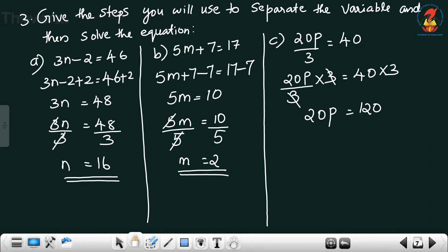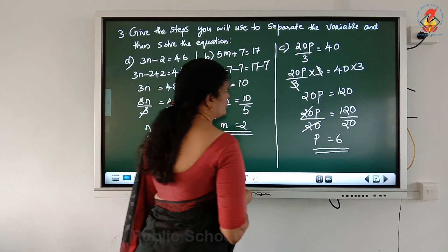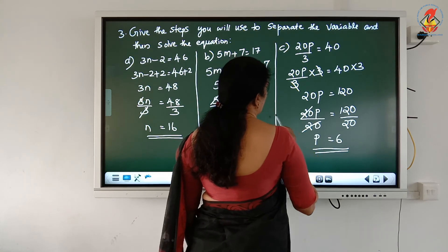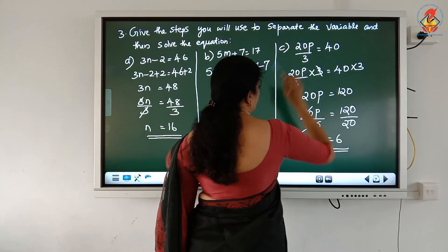Again we have to eliminate 20. That means 20 multiplied by p — divide both sides by 20. 20 and 20 cancel, giving p = 120 divided by 20 = 6. To check: substitute 6 in place of p — 20 multiplied by 6 = 120, and 120 divided by 3 = 40. LHS equals RHS, confirmed.